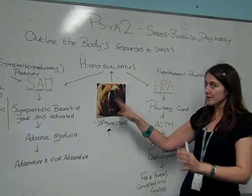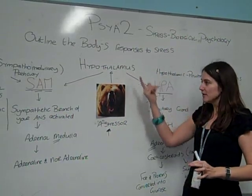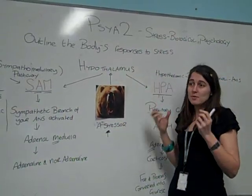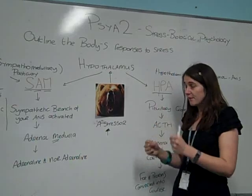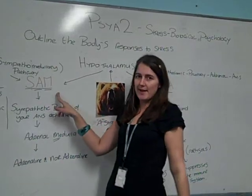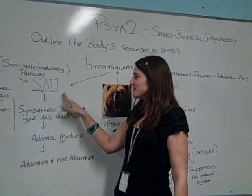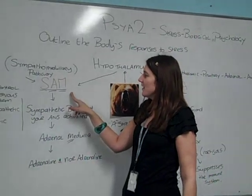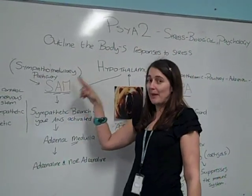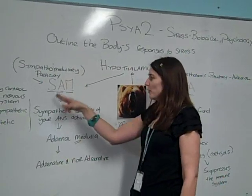A bear attacks. Your hypothalamus is triggered. Firstly, you're going to need to prepare yourself to either run away or fight it. That happens because of the SAM — the sympatho-adrenomedullary pathway, or the SAM.